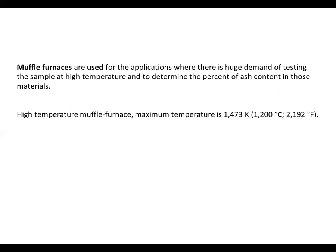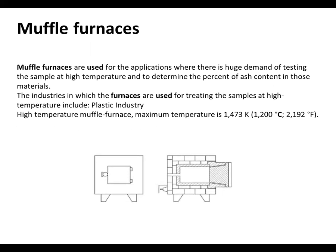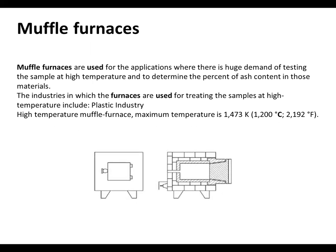Now we can see the muffle furnace. The muffle furnace is used for applications where there is a huge demand for testing samples at higher temperatures and determining the percentage of ash content in those materials. The industrial sectors where these furnaces are used include the plastics industry. The maximum temperature range of a high temperature muffle furnace is 1473 Kelvin, that is 1200 degrees Celsius or 2192 degrees Fahrenheit. This is the line diagram of the muffle furnace.